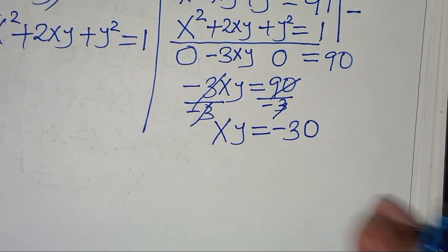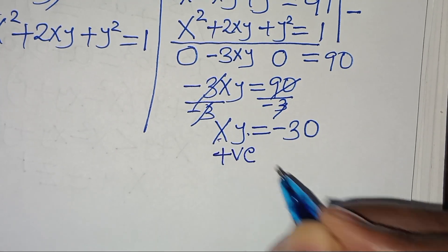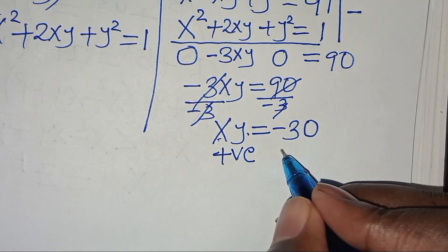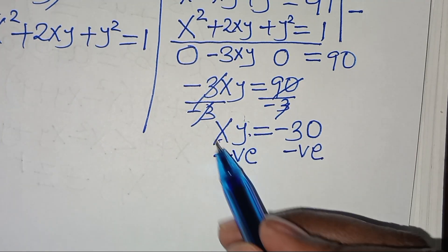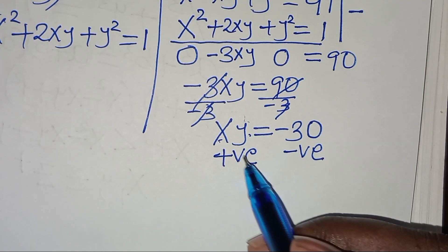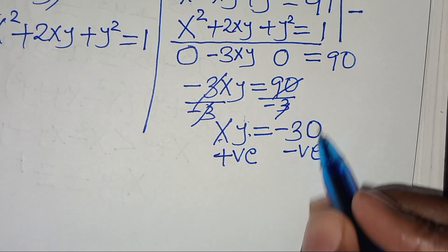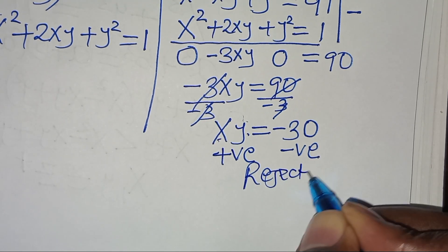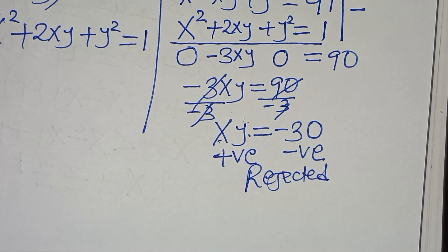Since x and y are both positive, their product xy must be positive. But we obtained xy equals negative 30, which is negative. This contradicts the condition, so Case 1 is rejected. Let's proceed to Case 2.